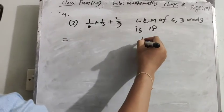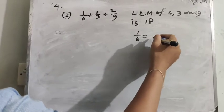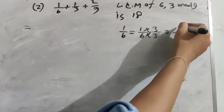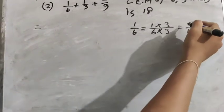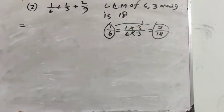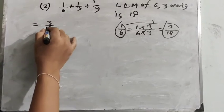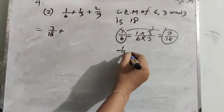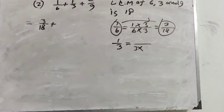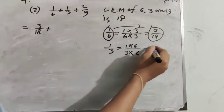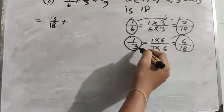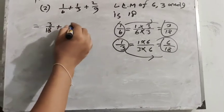The first fraction is 1/6. We have to change 6 to 18. So 6 multiplied by 3 equals 18, and 1 multiplied by 3 equals 3. So 3/18 is the equivalent fraction of 1/6, and we can write 3/18. The second fraction is 1/3. We have to change 3 to 18. So 3 multiplied by 6 equals 18, and 1 multiplied by 6 equals 6. So 6/18 is the equivalent fraction of 1/3, and we can write 6/18.